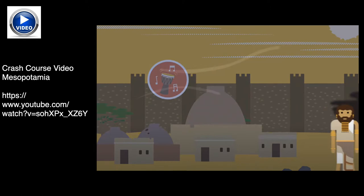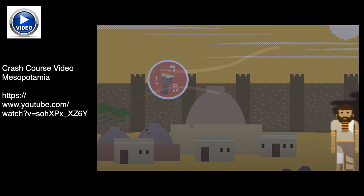If you would like to learn more about ancient Mesopotamian society, watch the Crash Course video on Mesopotamia — very informative and fun. Also, give it a try: try writing in cuneiform. Here's the alphabet for you and some example words you can write, like 'Welcome to Mesopotamia.' Go for it.